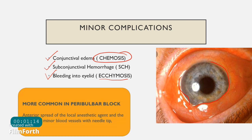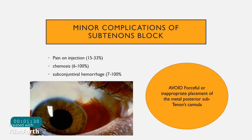These minor complications are more common in peribulbar block because the anesthetic agent is deposited into the adipose tissue anteriorly. This anterior spread can damage minor blood vessels with the needle tip. Minor complications can also occur with the subtenons block, where we use a blunt cannula instead of a needle. Improper technique or forceful metal cannula placement can cause pain on injection, seen in 15–33% of patients, chemosis in almost 100%, and subconjunctival hemorrhage in 7–100% of cases.